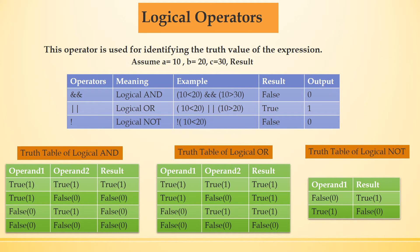Next is logical OR. Operand 1 says 10 is less than 20 — that is true. Operand 2 says 10 is greater than 20 — it is false. Checking the truth table of logical OR: first operand is true, second operand is false, and we will get a result that is true. It will return us the value 1 because our statement is true.